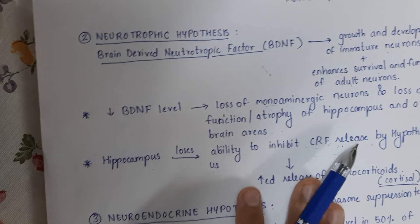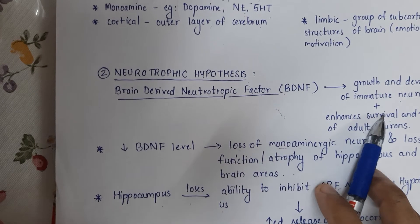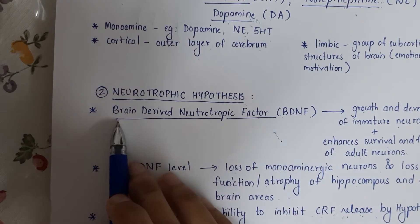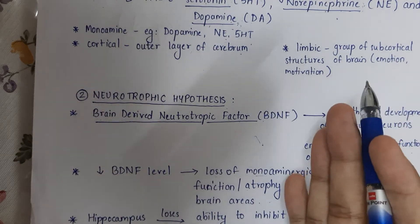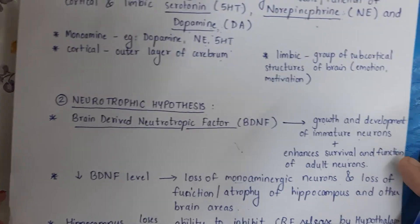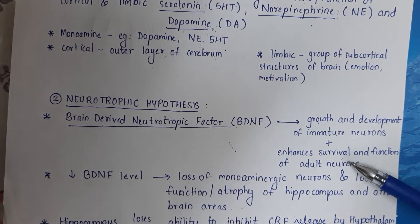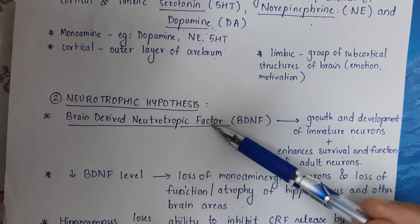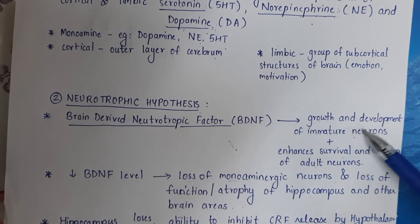The next hypothesis is the neurotrophic hypothesis. There is a factor called the brain-derived neurotrophic factor, or BDNF — also called brain-derived growth factor. It is involved in the growth and development of immature neurons, and for mature neurons, it supports their survival and function. BDNF is important for supporting the growth of immature neurons and enhancing the survival and function of adult neurons.